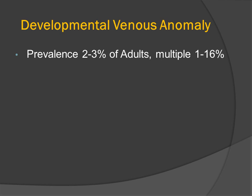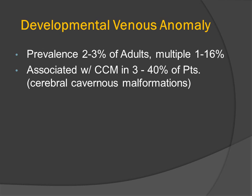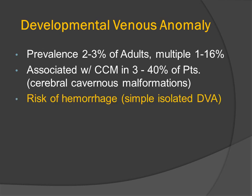Developmental venous anomalies are probably the most common kind of vascular malformation, with a prevalence estimated to be 2-3% in asymptomatic adults. Approximately 1-16% of patients will have multiple venous anomalies. 3-40% of patients with DVAs will also have an associated cerebral cavernous malformation.